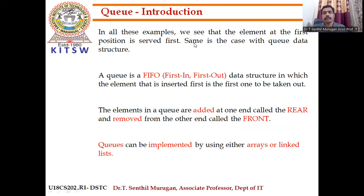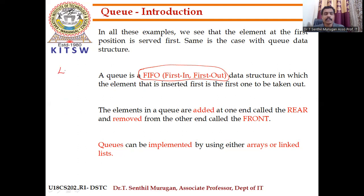From the previous examples, we have seen that the element at the first position is served first. The queue data structure follows FIFO order — First In First Out. Previously we discussed the stack, which follows Last In First Out (LIFO) order. But here, the queue uses FIFO order: whoever comes first, that will go out first.